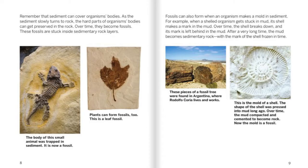These fossils are stuck inside sedimentary rock layers. The body of this small animal was trapped in sediment — it is now a fossil. Plants can form fossils too; this is a leaf fossil. Fossils can also form when an organism makes a mold in sediment. For example, when a shelled organism gets stuck in mud, its shell makes a mark on the mud. Over time, the shell breaks down, and its mark is left behind. After a very long time, the mud becomes sedimentary rock, with the mark of the shell frozen in time.